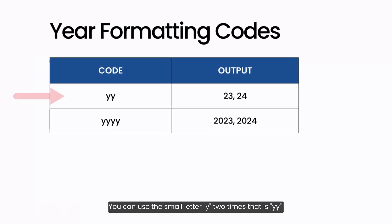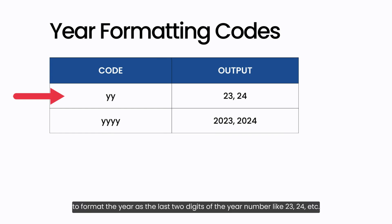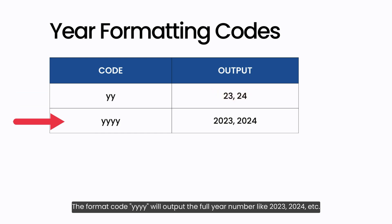You can use yy to format the year as the last two digits of the year number, like 23, 24, etc. The format code yyyy will output the full year number like 2023, 2024, etc.